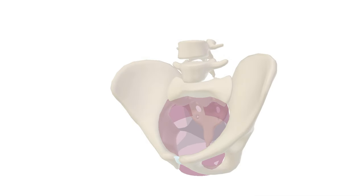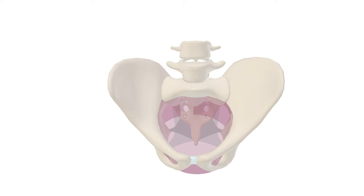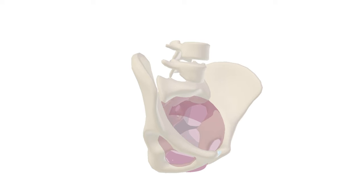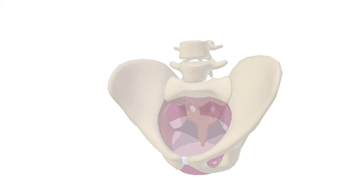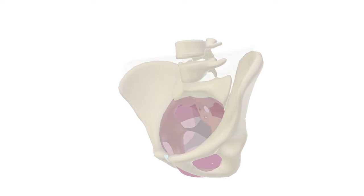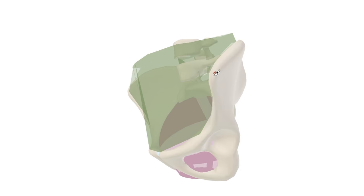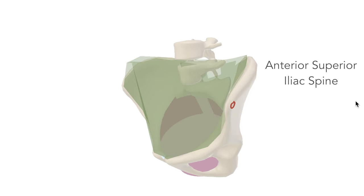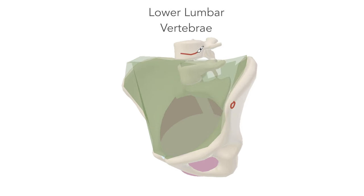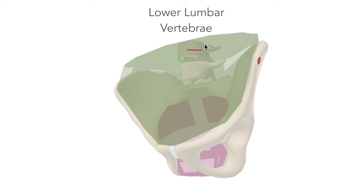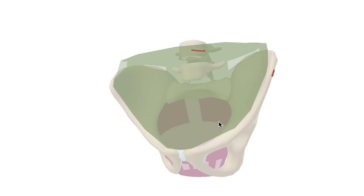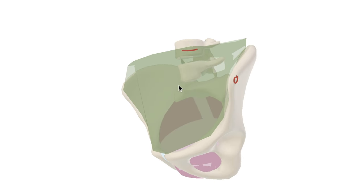Here we have the true pelvis, a fetching shade of magenta. This title is in contrast to the false pelvis, which has borders at the anterior superior iliac spine and the lumbar vertebra. Considering that all the important pelvic anatomy is in the true pelvis, the other is obviously the false pelvis — not the true pelvis.